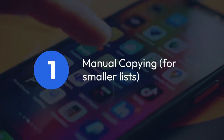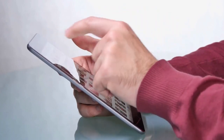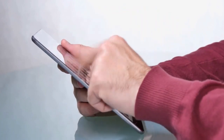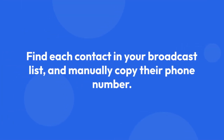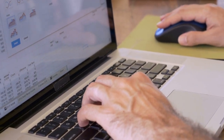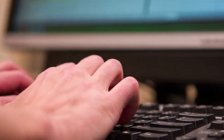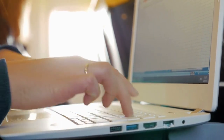One: manual copying for smaller lists. If your broadcast list is relatively small, the simplest method is manual copying. Open your broadcast list — each contact in the list is already saved in your phone's contact list. Go to your phone's contact app, find each contact in your broadcast list, and manually copy their phone number. You can paste these numbers into a document like a notepad file, a spreadsheet program like Google Sheets or Excel, or a word processor like Microsoft Word or Google Docs.